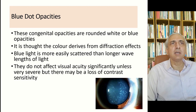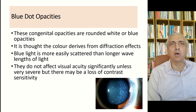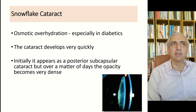Blue dot opacities are rounded white or blue congenital opacities; the color derives from diffraction effects, as blue light is more easily scattered than longer wavelengths. They do not significantly affect visual acuity unless very severe, but there may be a loss of contrast sensitivity. Initially as a resident you might think how can the patient see through so many spots, but they actually have minimal visual loss.